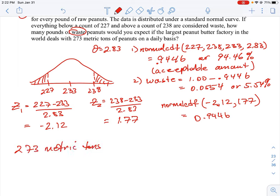This is one of those ones you're going to have to look up the conversion for. If you do an online search, you'll find that one metric ton is equal to 2,204.623 pounds. So we're going from metric tons to pounds, and then we're just going to take 5.54% of that, so 0.0554.